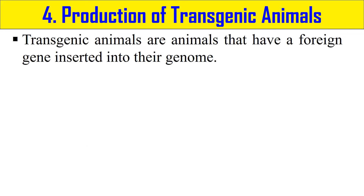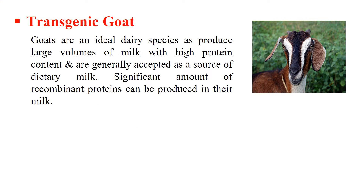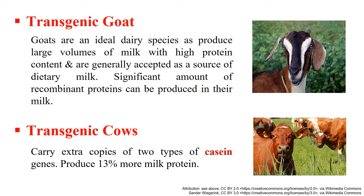The next application is the production of transgenic animals — animals that carry foreign genes. Using recombinant DNA technology we can insert genes into animals to make them transgenic. Transgenic mice can be used as model systems for treating various human genetic diseases. Transgenic goats can be engineered to produce pharmaceutical products or have increased protein content in their milk. Similarly, transgenic cows can be made by transferring genes — for example, the casein protein gene — so that they produce 13% more milk protein.